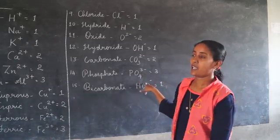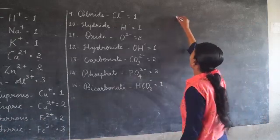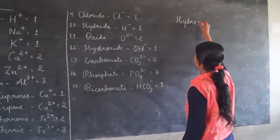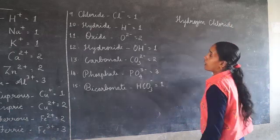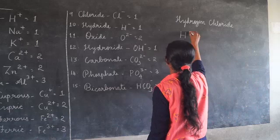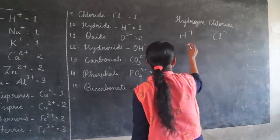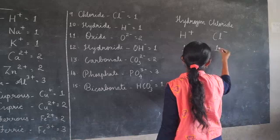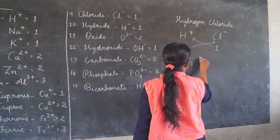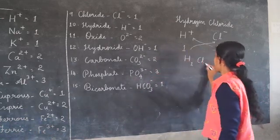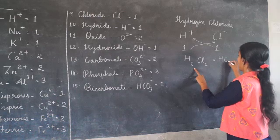Using these valencies, how can we write the chemical formula of a compound? For example, hydrogen chloride. Hydrogen is represented as H plus and chloride ion is Cl minus. The valency of hydrogen is 1 and the valency of chlorine is 1. Interchanging the valencies gives hydrogen 1, chloride 1. Since the valencies of both atoms are the same, it is not necessary to write the subscript. So the formula of the compound is HCl.